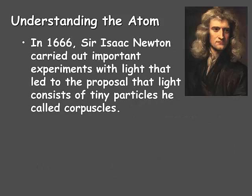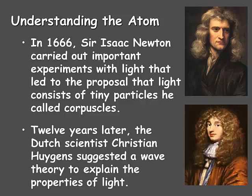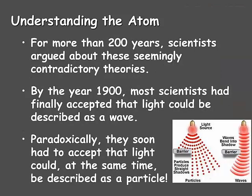In 1666, Sir Isaac Newton carried out important experiments with light that led to the proposal that light consists of tiny particles that he called corpuscles. Twelve years later, the Dutch scientist Christian Huygens suggested a wave theory to explain the properties of light. For more than 200 years, scientists argued about these seemingly contradictory theories. But by the year 1900, most scientists had finally accepted that light could be described as a wave. Paradoxically, they soon had to accept that light could, at the same time, be described as a particle.